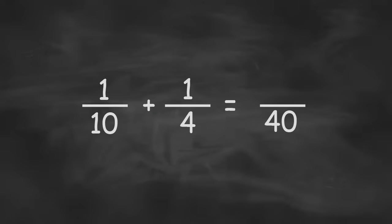Now we have a 1 on top, so 1 times 4 is 4. 1 times 10 is 10. Adding 4 and 10 across the top, we get 14.